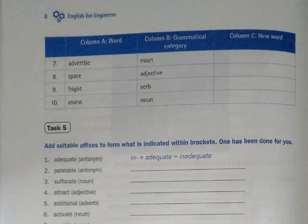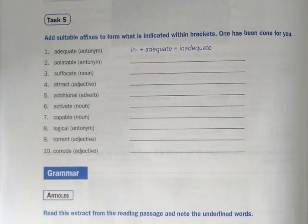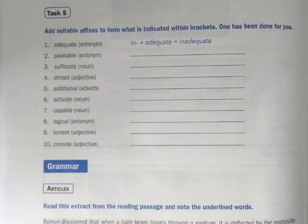So again you have task 5. Add suitable affixes to form what is indicated within the brackets. One has been done for you. First one is adequate. You have to make it into an antonym. So in plus adequate, we get inadequate, which is the antonym of adequate.